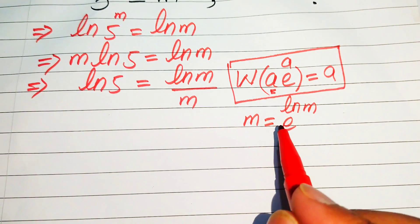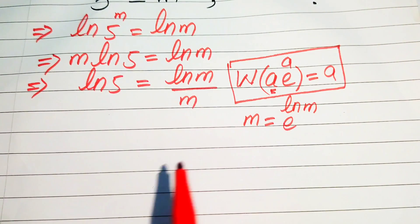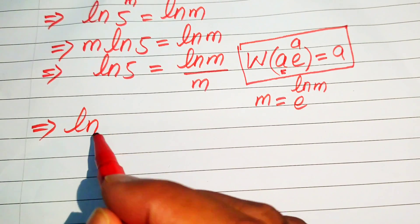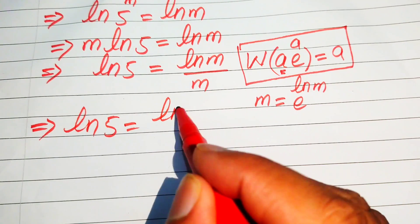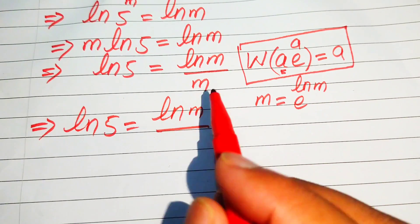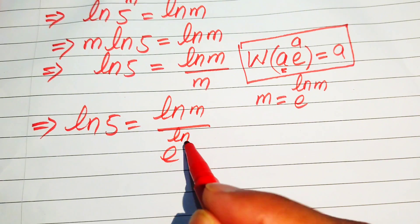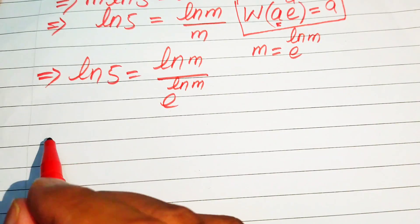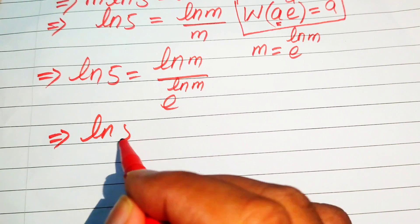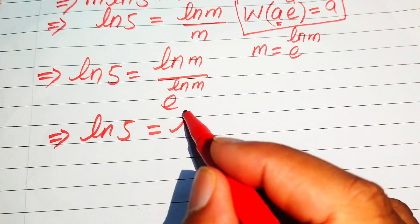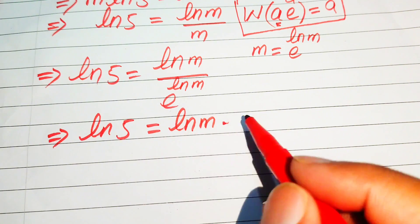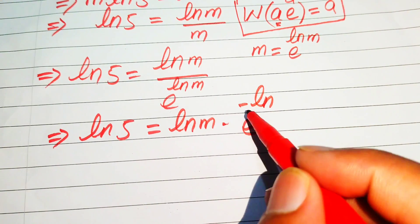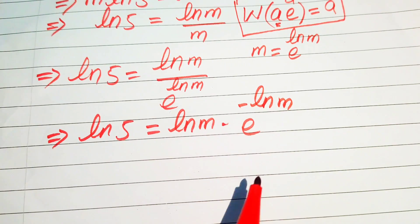We replace m with e to the power of log m. After that, the right-hand side is written as log of m divided by e to the power of log m. We move the denominator to the numerator side, writing it as log m times e to the power of minus log m.